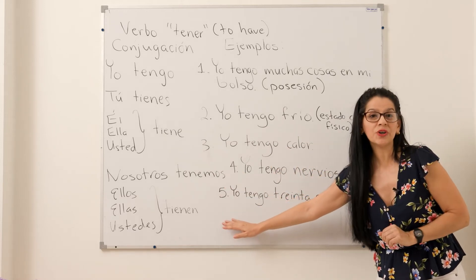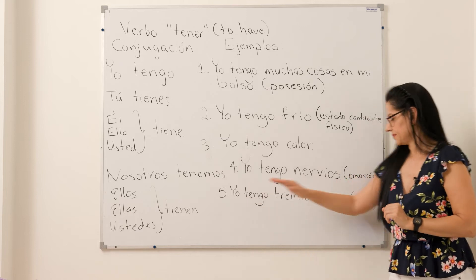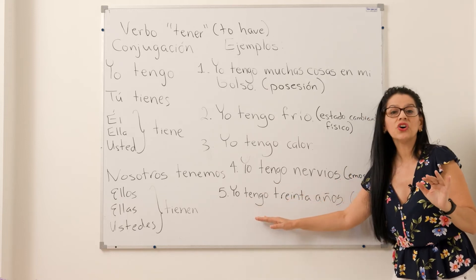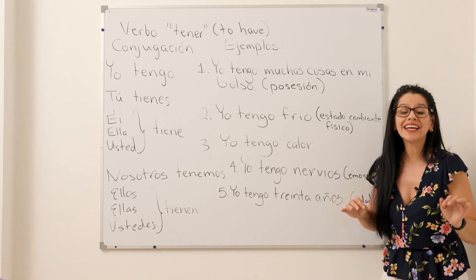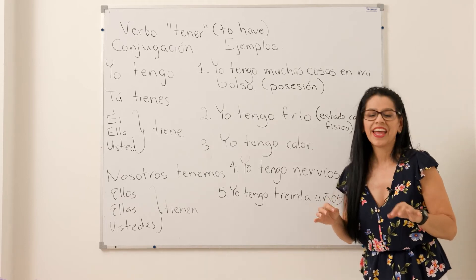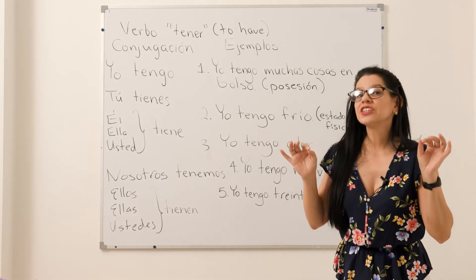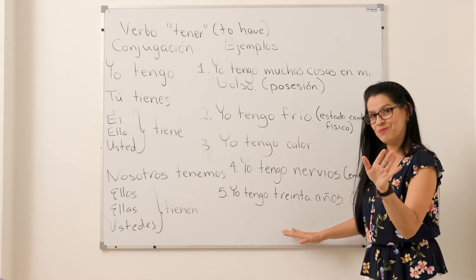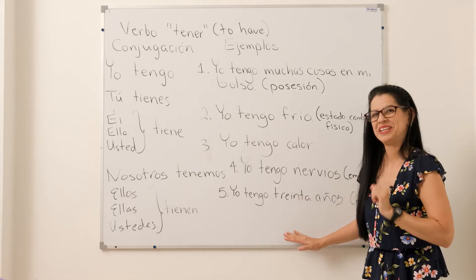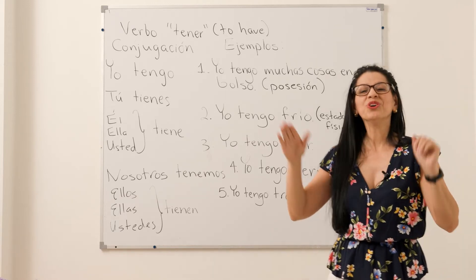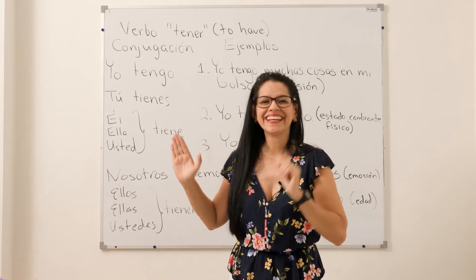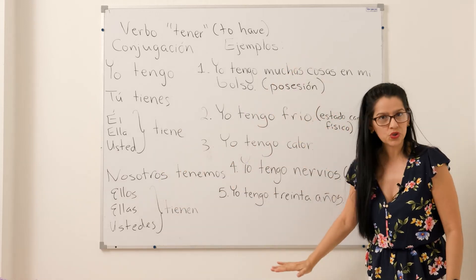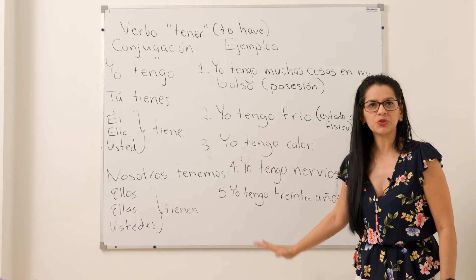Y número cinco: para expresar edad — Yo tengo treinta años. Es un ejemplo solamente. Muy bien, estimados estudiantes. Estos son algunos usos del verbo tener.